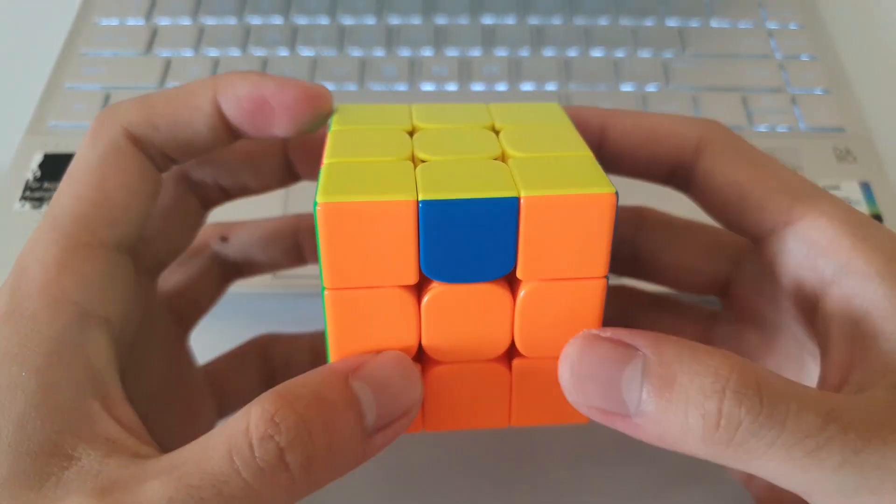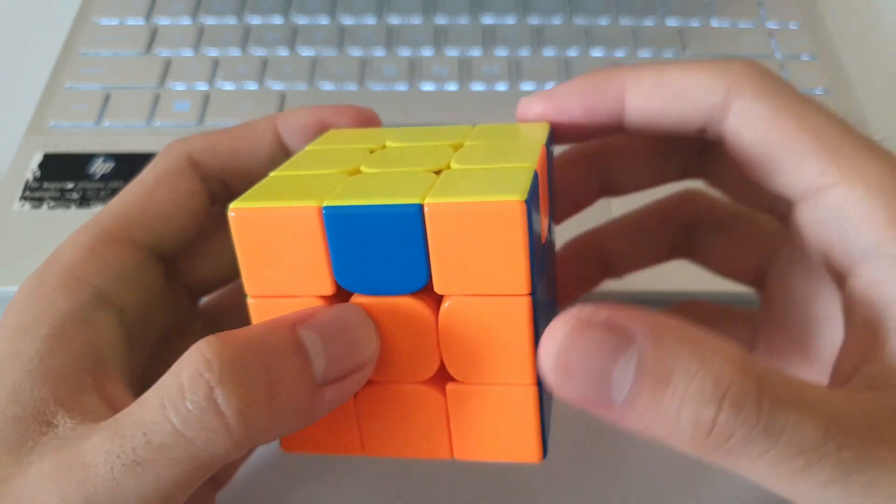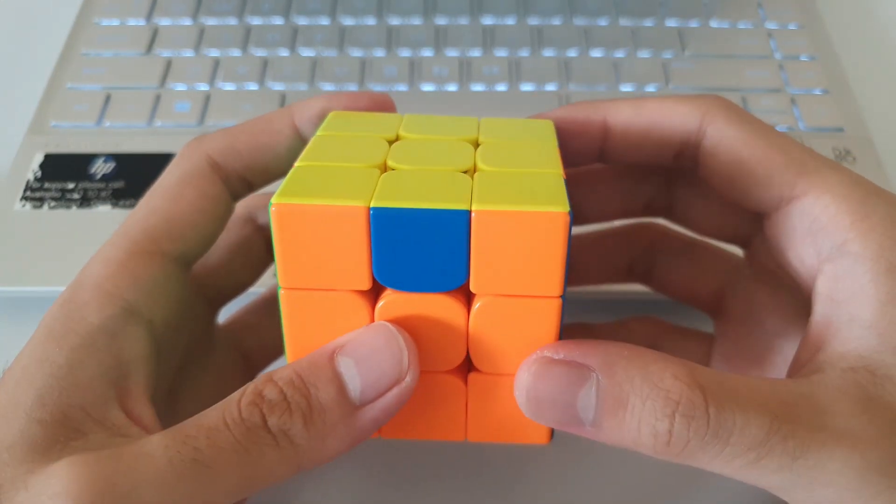But if we wanted to swap hands, then we'll have to mirror the algorithm, we'll have to start facing the other edge. In this case, it'll go something like this.